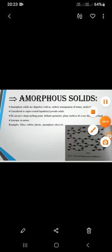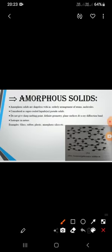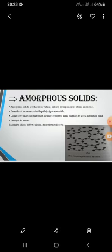The second type is amorphous solids. Amorphous solids have disorderly arranged molecules — they do not have definite shape and also do not have definite volume, as seen in the diagram. They are also called supercooled liquids or pseudo solids. At a certain temperature, the solid becomes very cool, hence the name supercooled liquids.